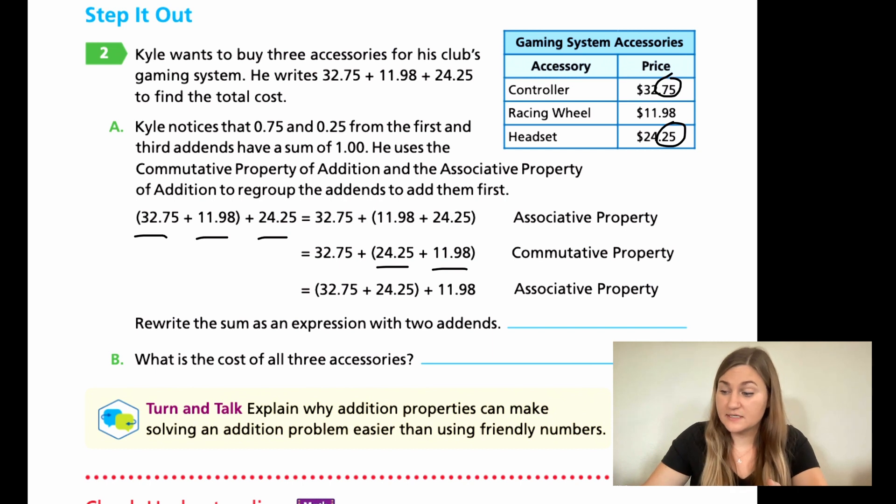This just means add what's in the parentheses and then add the 11.98. They do this because the 0.25 and the 0.75 are going to give us that one whole. So see if you can add these numbers without writing anything down. See if you can work it out in your head to what 32.75 and 24.25 would be. They are going to be a whole number because remember those cents equals one whole. Then can you add the cost of all three accessories? Again, try to do this in your head if you can. If not, of course, always write it down on a piece of paper. Go ahead and just try to do these two blanks and then we'll come back and solve it. Hit pause here.